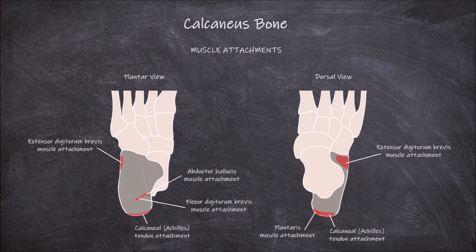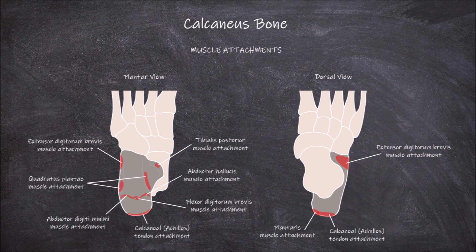In addition, the flexor digitorum brevis muscle also originates from the medial process of the calcaneal tuberosity. The abductor digiti minimi muscle originates from the lateral process extending to the medial process of this calcaneal tuberosity. A portion of the tendon of the tibialis posterior muscle inserts onto the plantar surface of the sustentaculum telli. The large medial head of the quadratus plantae muscle originates from the medial plantar surface of this bone, and the smaller lateral head of this muscle originates from the lateral plantar surface of this bone.